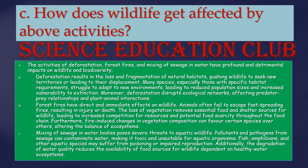Moreover, deforestation disrupts ecological networks, affecting predator-prey relationships and plant-animal interactions. Forest fires have direct and immediate effects on wildlife; animals often fail to escape fast-spreading fires, resulting in injury or death. The loss of vegetation removes essential food, shelter, and water sources for wildlife, leading to increased competition for resources. Fire-induced changes in vegetation composition can favor certain species over others, altering the balance of ecosystems.